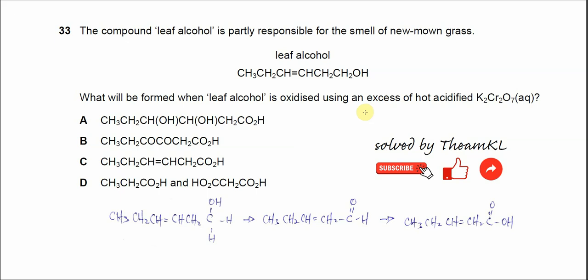Question 33. The structure of leaf alcohol is given here. In this compound there are two groups: C=C double bonds and alcohol.